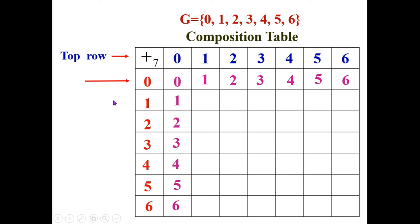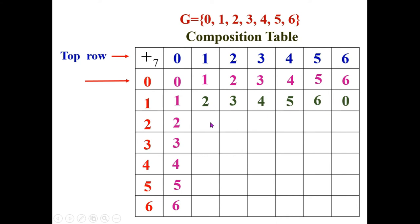Coming to the second row headed by number 1: 1+1=2, 1+2=3, 1+3=4, 1+4=5, 1+5=6. For 1+6=7: when 7 is divided by 7, the remainder is 0. Having filled the second row, we fill the second column by writing the elements in the same order: 3, 4, 5, 6, 0.